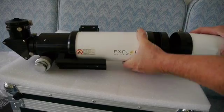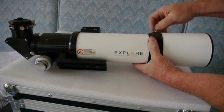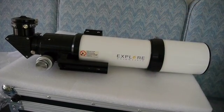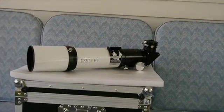The scope comes with a removable dew shield and apparently you slide it off and then turn it around and attach it like this. The telescope's about 18 inches long with the dew shield attached.